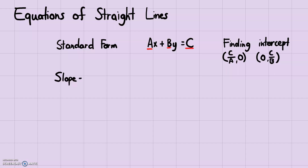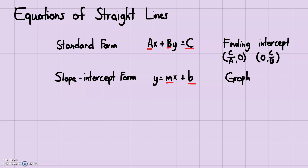The slope-intercept form is one of the most commonly known forms among students. This is y = mx + b, where m is the slope and b is the y-intercept. This is good for graphing because you can just see the y-intercept, plot that point, and then count the slope from there.